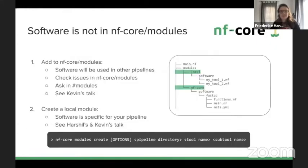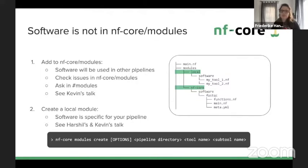If the software you're looking for is not in NF-core modules, you have two options: add it to NF-core modules, or create a local module. Adding it to NF-core modules is useful if other pipelines will use the software too — you can check the issues or ask in the module Slack channel, and Kevin will talk about how to actually add a module in his talk. The other option is to create a local module for software specific to your pipeline, using NF-core modules create.